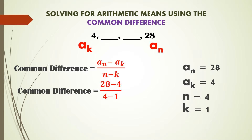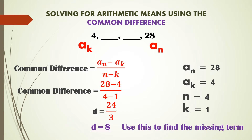Replacing the variables: (28 − 4) / (4 − 1) = 24 / 3 = 8. So the common difference is 8. To find the missing terms, we add 8 to 4 to get 12, then add 8 to 12 to get 20. Therefore, the two missing arithmetic means between 4 and 28 are 12 and 20.